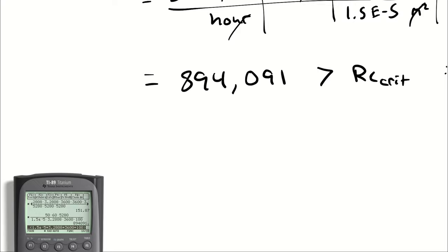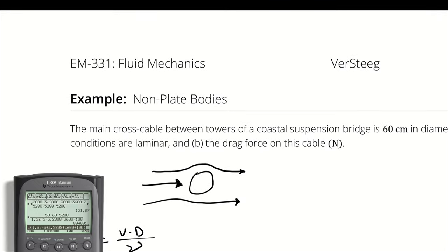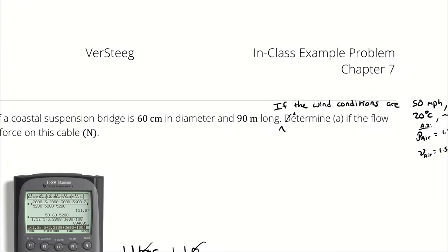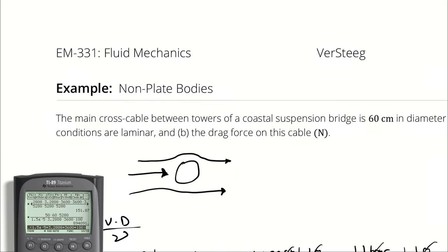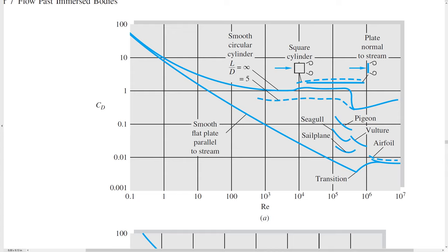So in answer to part A, we can pretty confidently say this is not laminar. The question specifically asked if it was laminar. And if we had ended up in a situation where we had a Reynolds number in, say, this area here, even there we would still answer no. Even though it isn't necessarily turbulent, it's definitely not laminar, or at least completely laminar anymore.